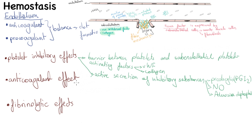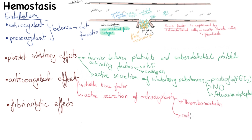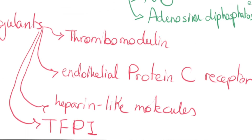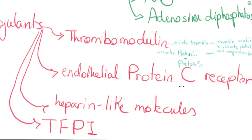The endothelium also binds and alters the activity of thrombin. For anticoagulant effects, tissue factor is shielded beneath the endothelium. The endothelium also produces anticoagulant factors including thrombomodulin, endothelial protein C receptor, heparin-like molecules, and tissue factor pathway inhibitor (TFPI). Thrombomodulin binds thrombin; when bound, thrombin loses its ability to activate platelets and coagulation factors and instead activates protein C — a vitamin K-dependent protease requiring cofactor protein S.